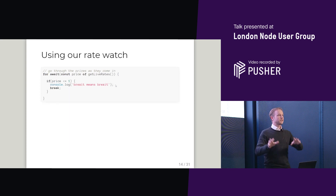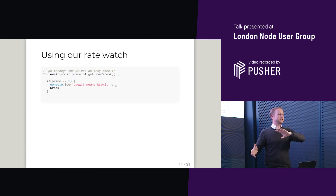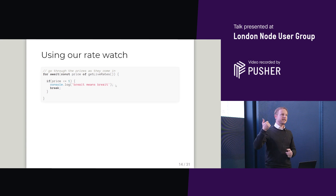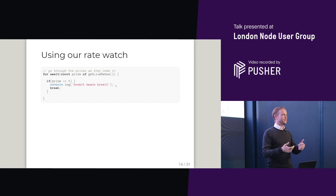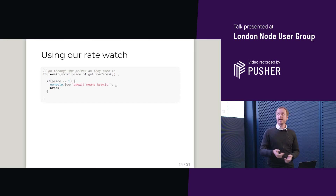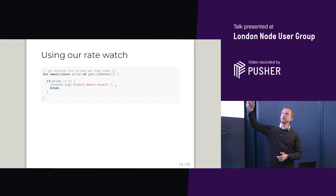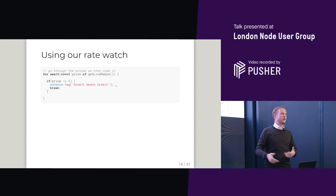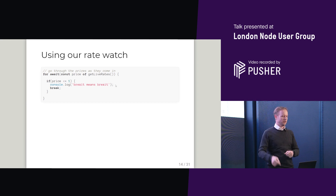That was how to write the async generator. This is how you'd use it — a similar for loop. You've got a for-await, and essentially you'd stream your async results through this for loop.